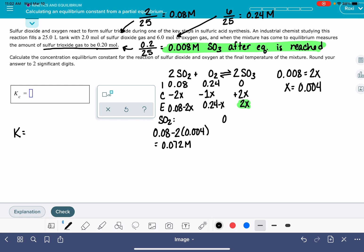For our O2, the little equation we came up with was 0.24 minus x, and x is 0.004, so at equilibrium, this is 0.236 molar.